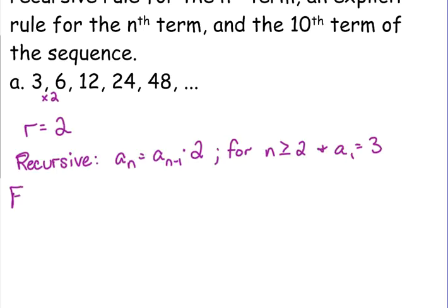The explicit is A sub N is equal to our first term, 3 times the common ratio to the N minus 1.